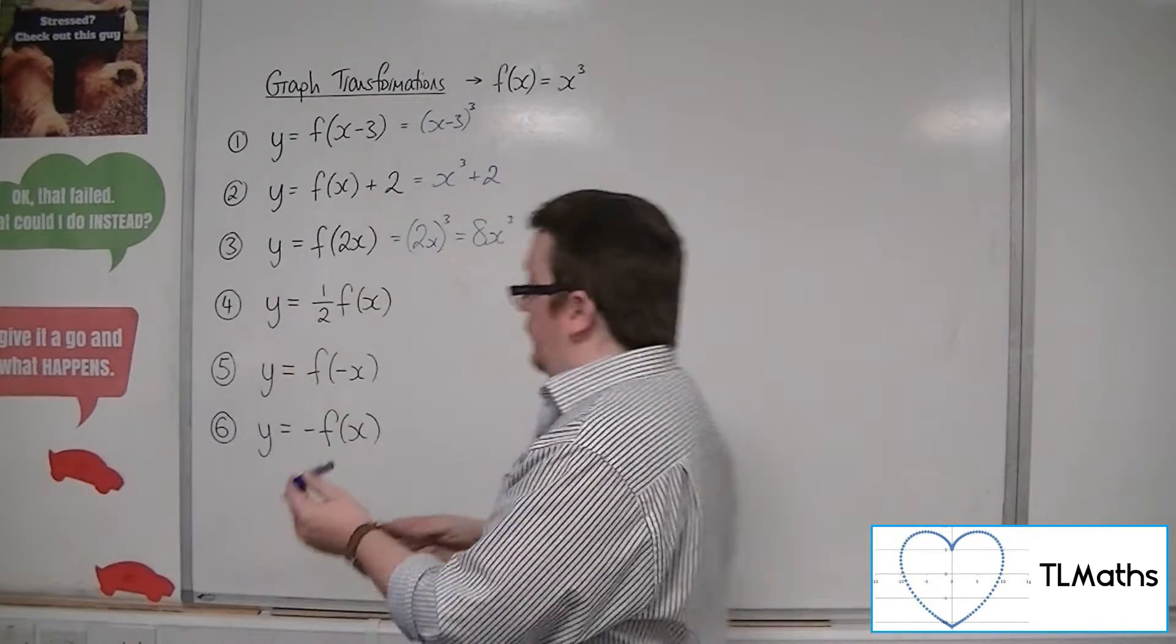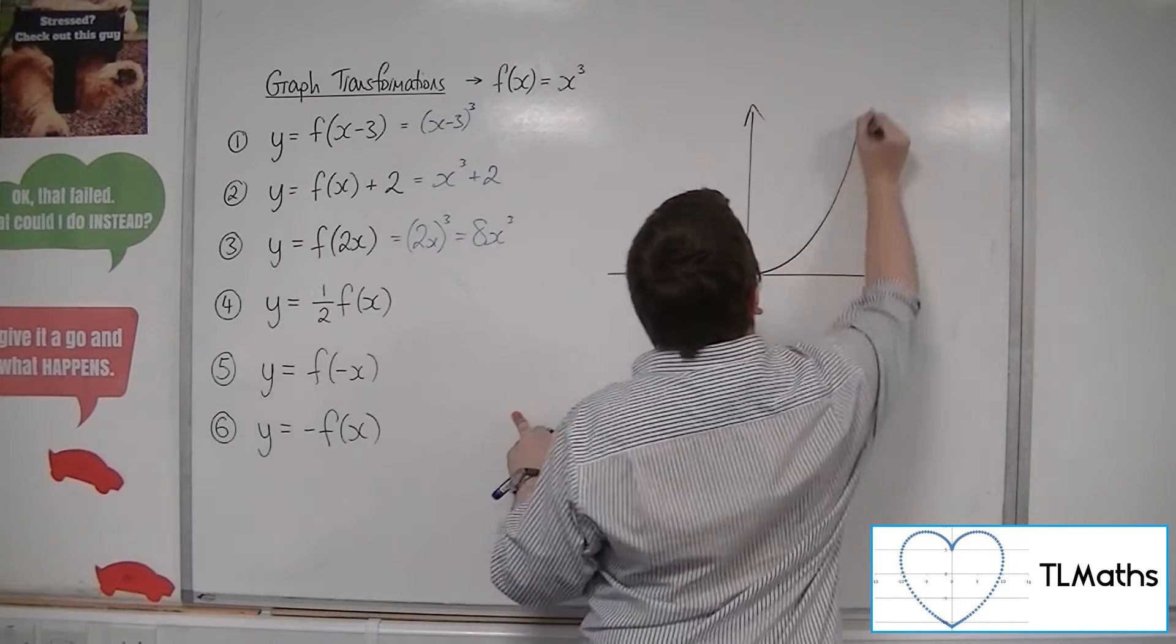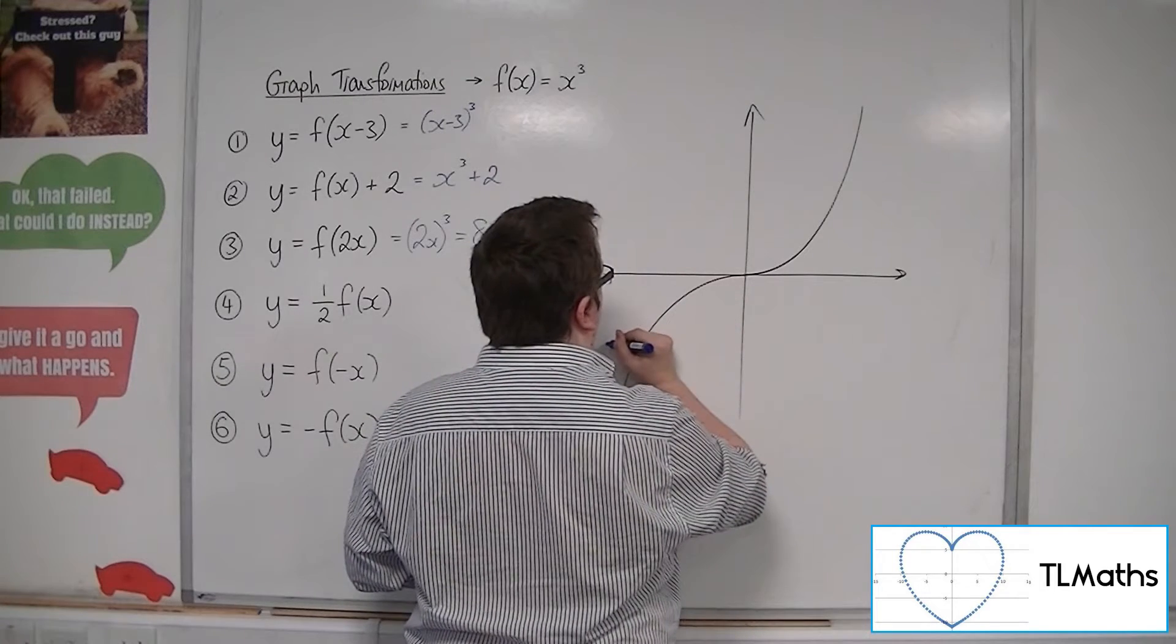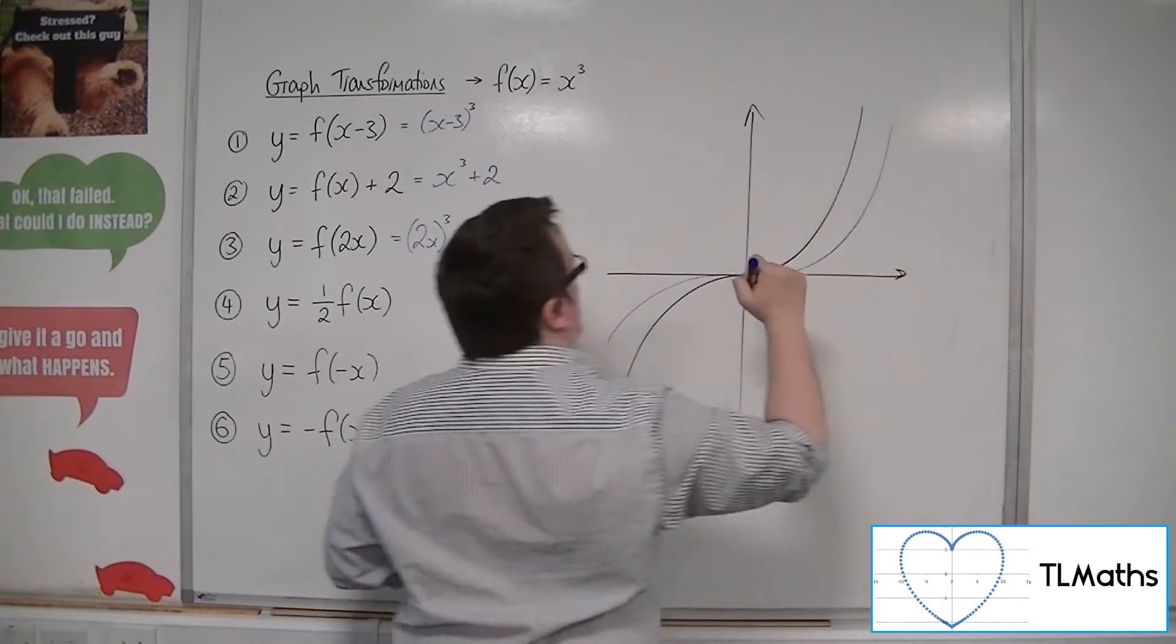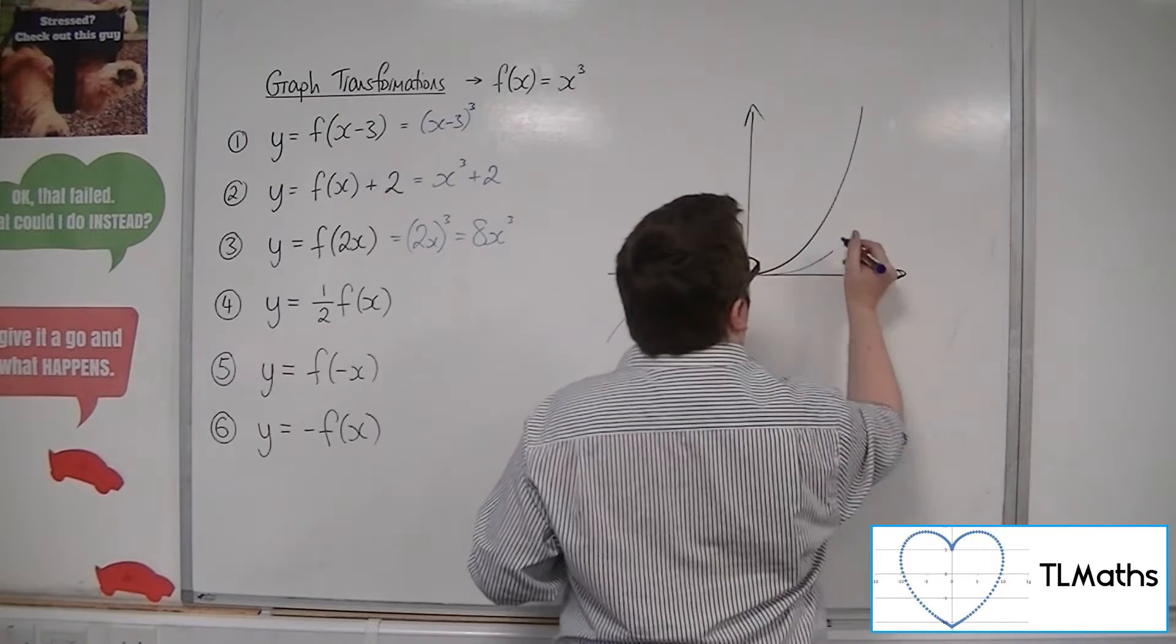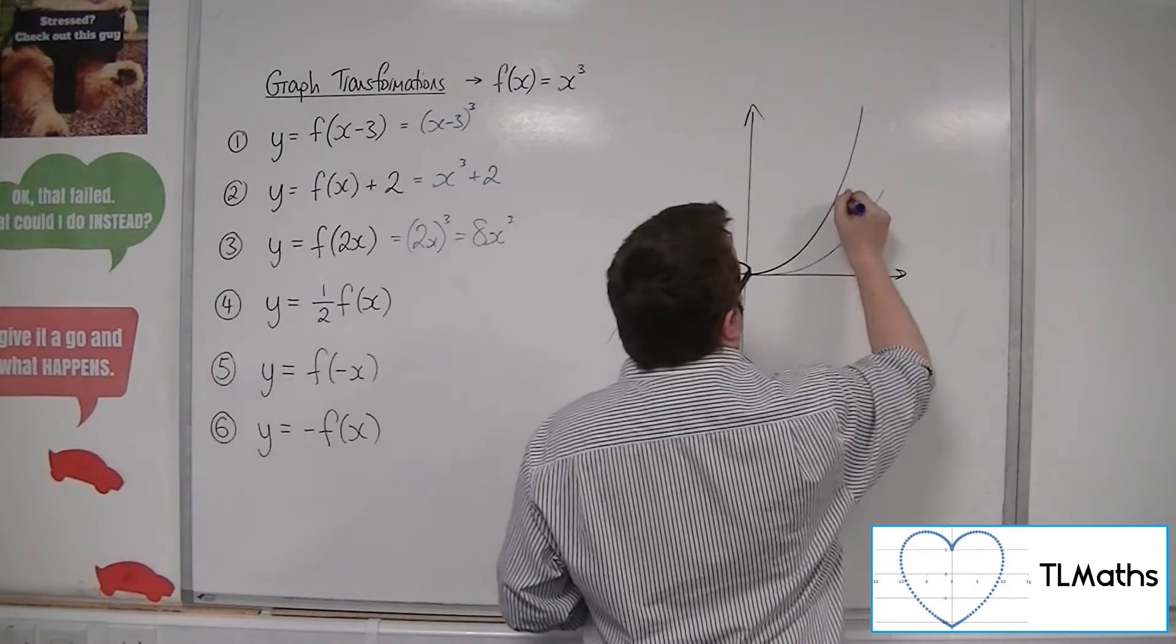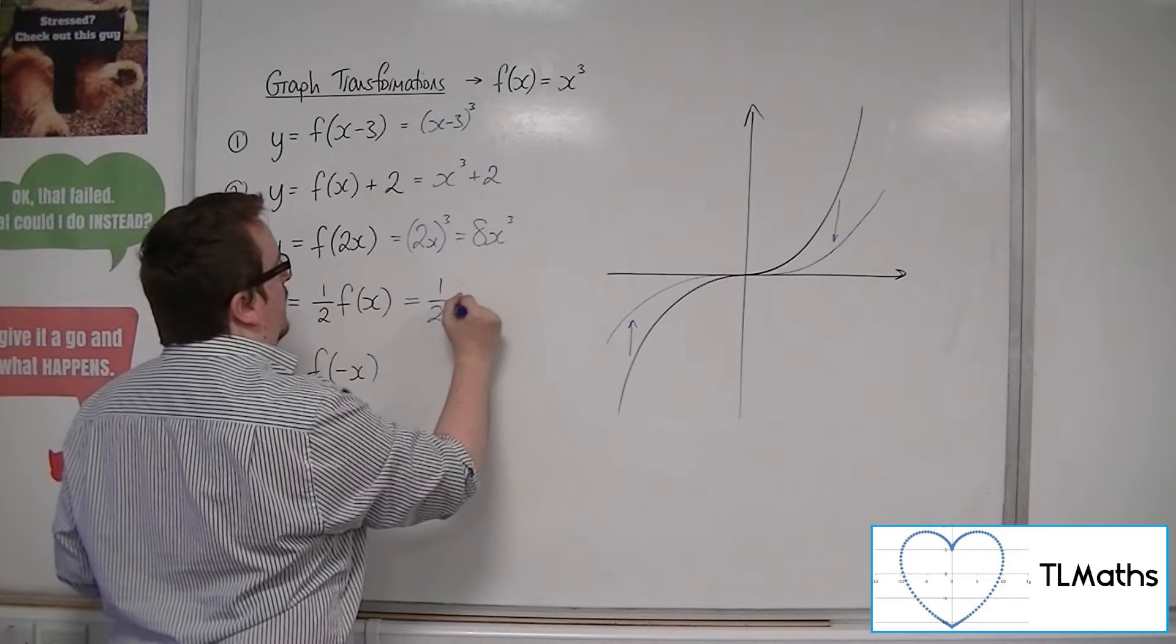Now, a half f of x. There's y equals x cubed again. Half of f of x. So that would stretch it by factor of a half parallel to the y-axis. So it looks something like that. It is still going off, maybe not quite at a steeper angle. Something like that. So each of the y coordinates of the original curve have been halved. So this would be 1 half x cubed.